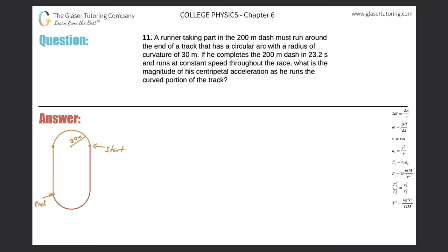Number 11. A runner taking part in the 200 meter dash must run around the end of a track that has a circular arc with a radius of curvature of 30 meters. If he completes the 200 meter dash in 23.2 seconds and runs at a constant speed throughout the race, what is the magnitude of his centripetal acceleration as he runs the curved portion of the track?